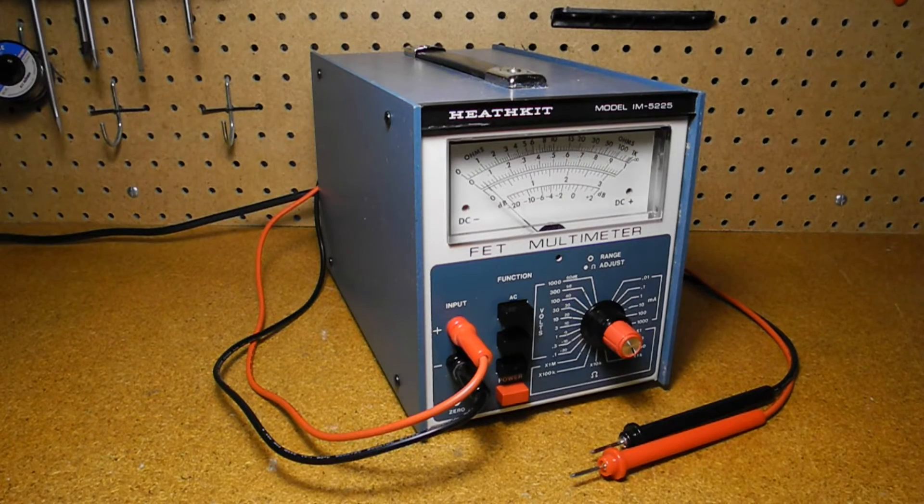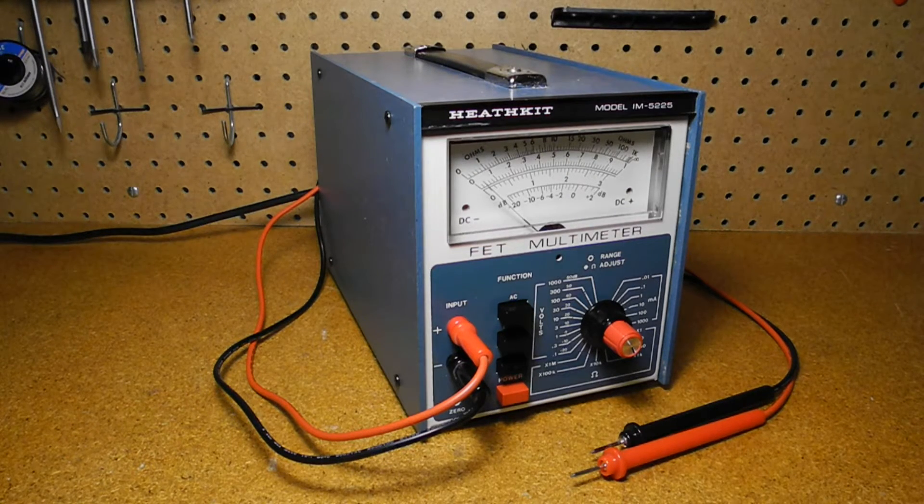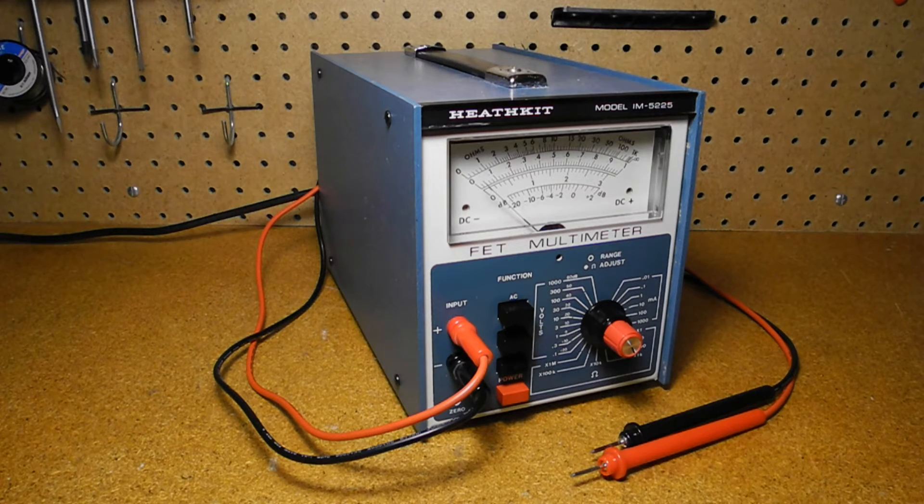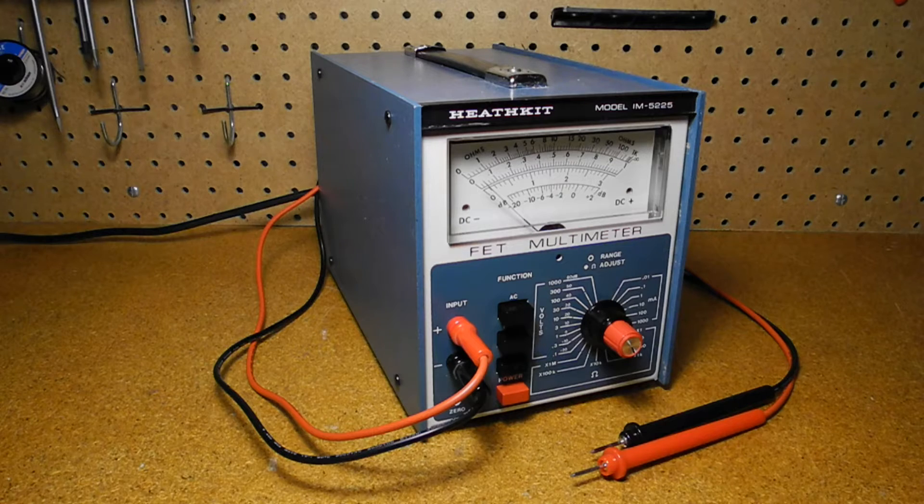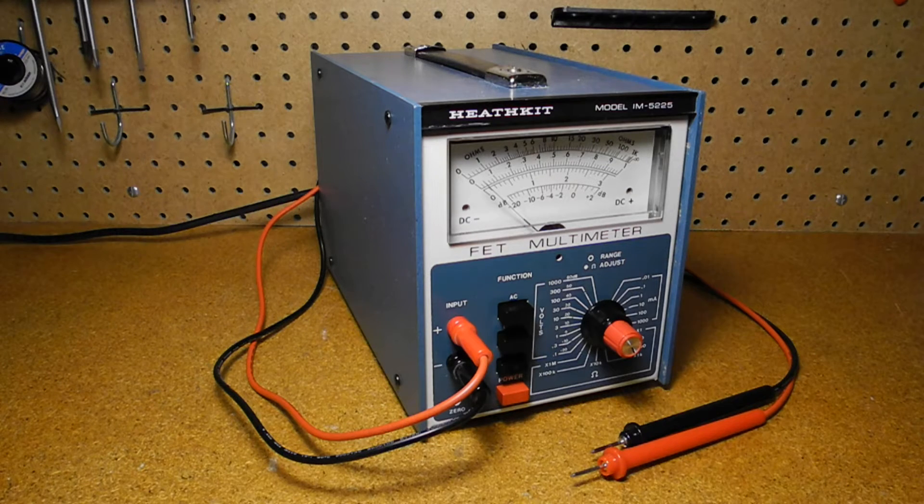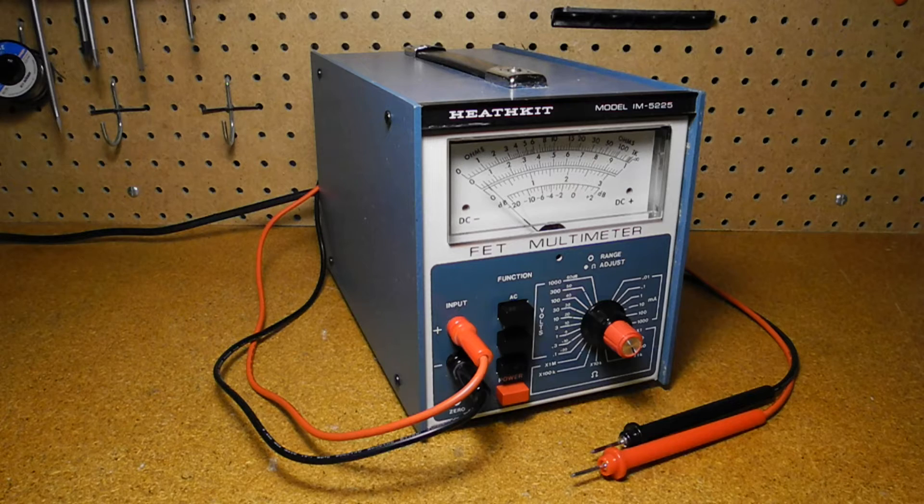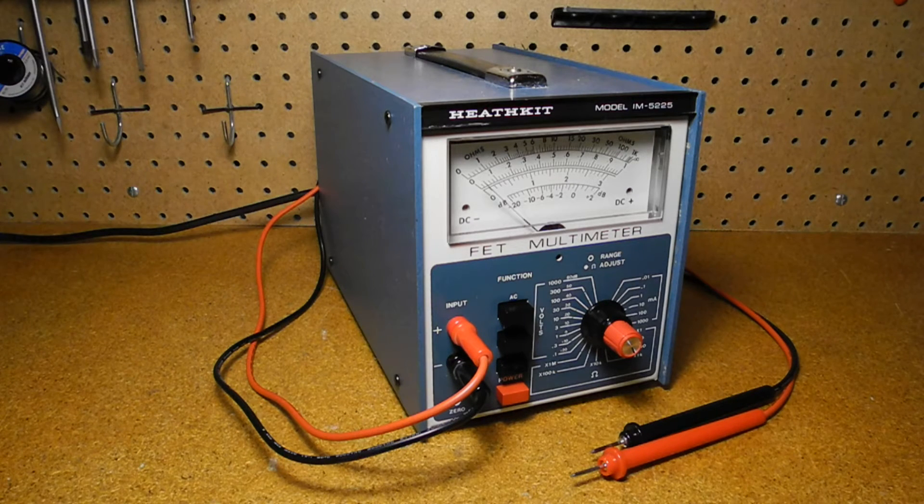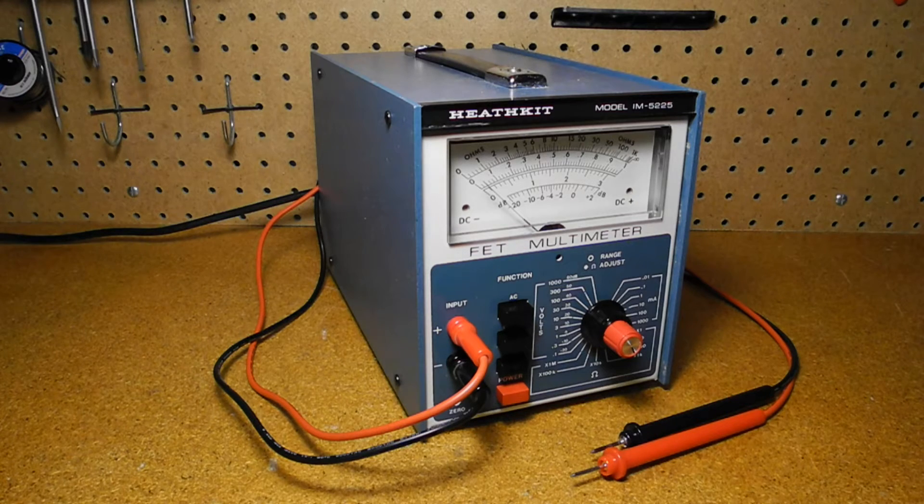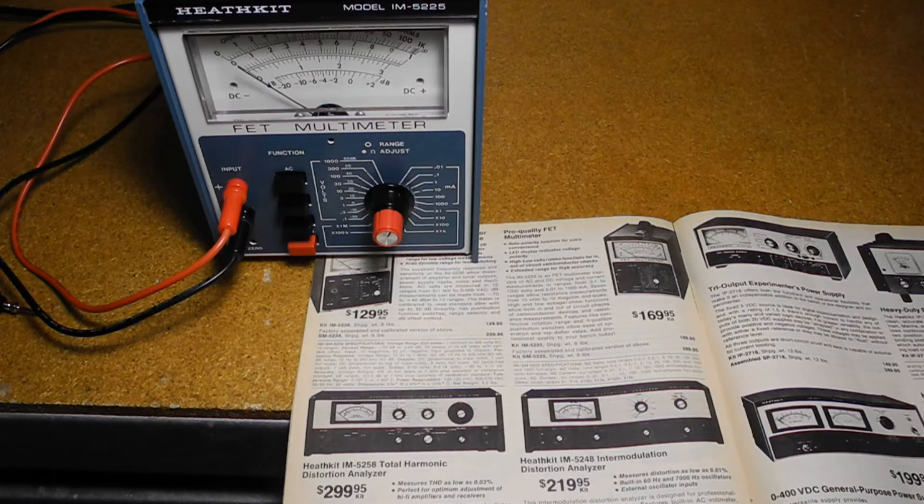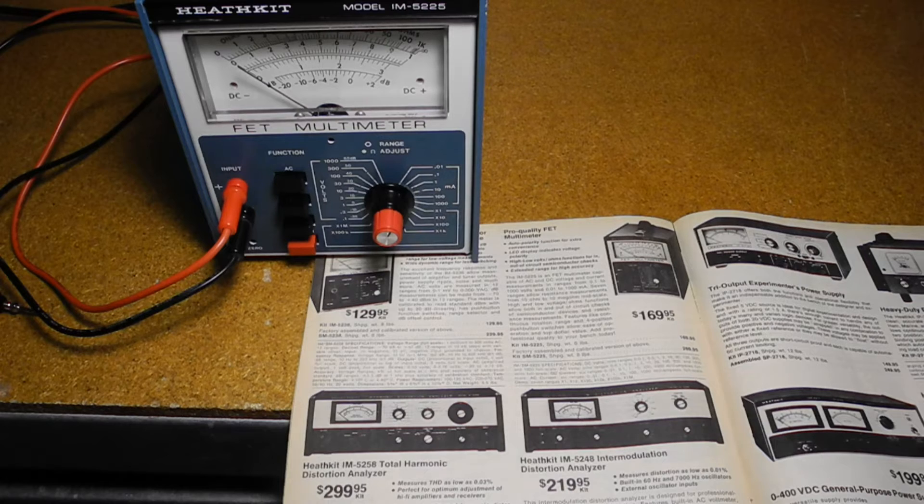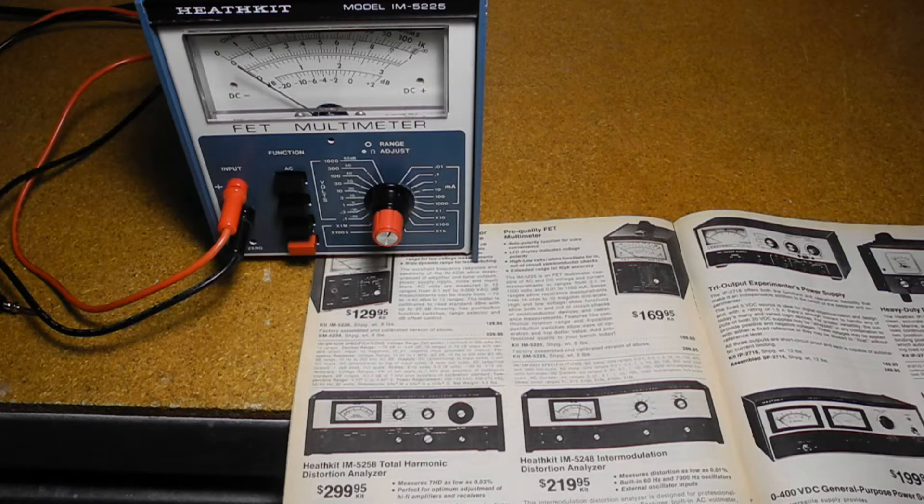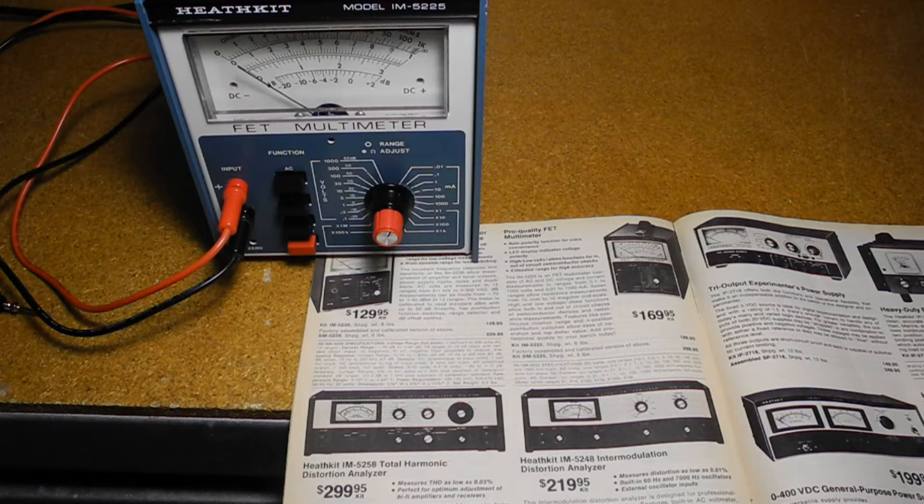The Heathkit IM5225 is a solid-state multimeter using field-effect transistors. It was the only meter of this type offered by Heathkit, and complemented their range of VOMs and VTVMs, which also continued to be sold at the same time. A similar-looking model was the IM5238, which was intended only for measuring audio-frequency AC voltages. The IM5225 was offered from 1977 to 1981 at a list price that ranged over that time from about $120 to $170 US dollars.